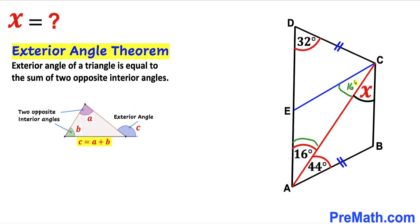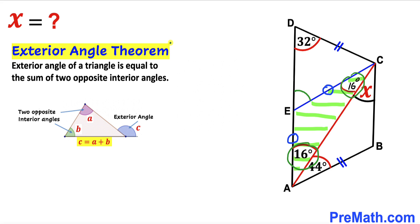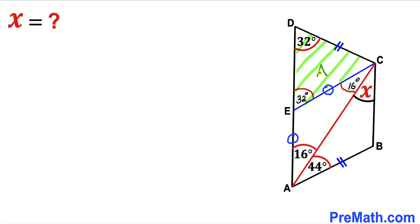Focusing on triangle AEC, this is an isosceles triangle since these two angles are equal, so these two side lengths are equal. We can see this is an exterior angle equal to the sum of the two opposite interior angles by the exterior angle theorem, so this exterior angle turns out to be 32 degrees.